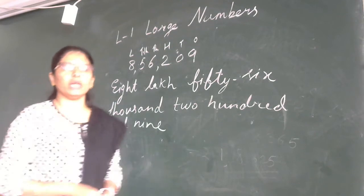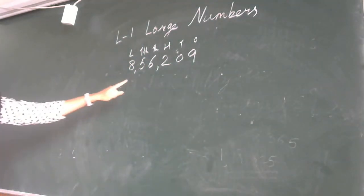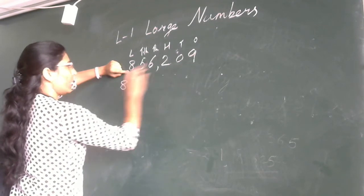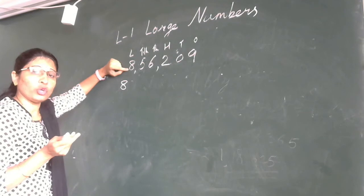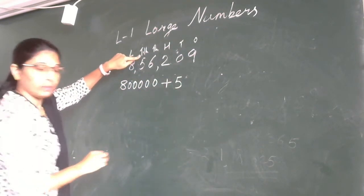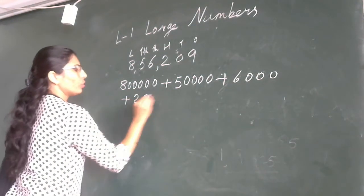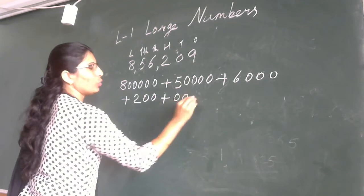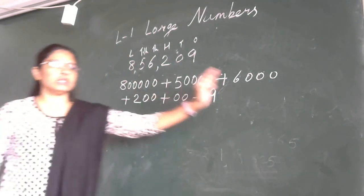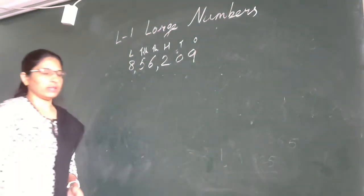Now how do we expand that number? This is the short form, so we expand it. Eight is in the lakhs place — count how many digits follow: one, two, three, four, five — so eight lakh is written as 8 followed by five zeros, plus five in ten thousands place with four zeros, plus six in thousands place with three zeros, plus two hundred, plus zero in tens, plus nine in ones place. This is how we expand any large number.